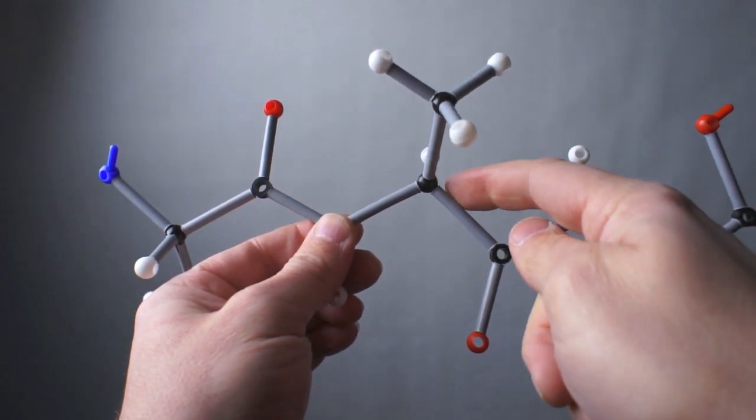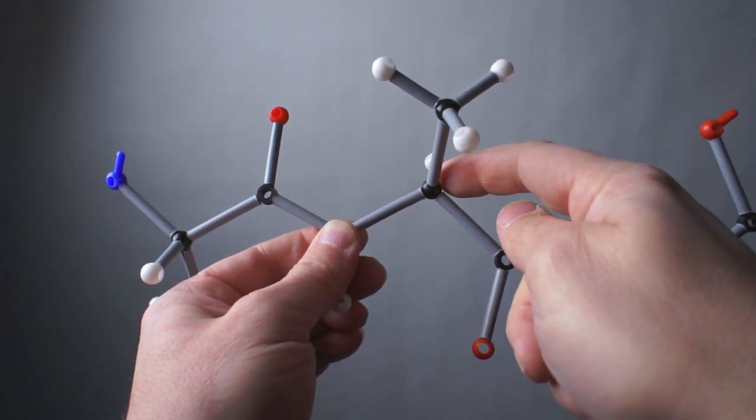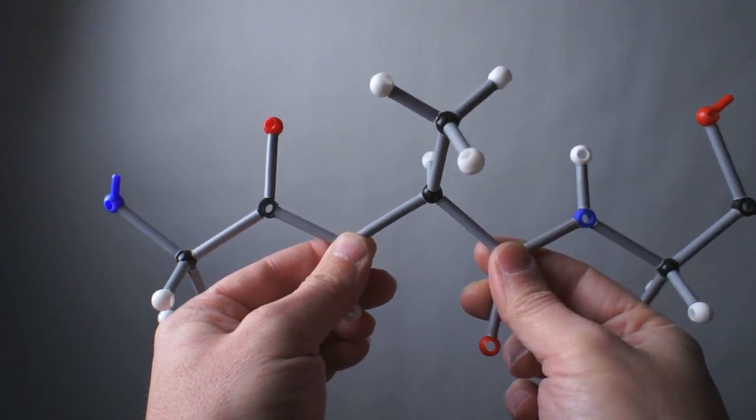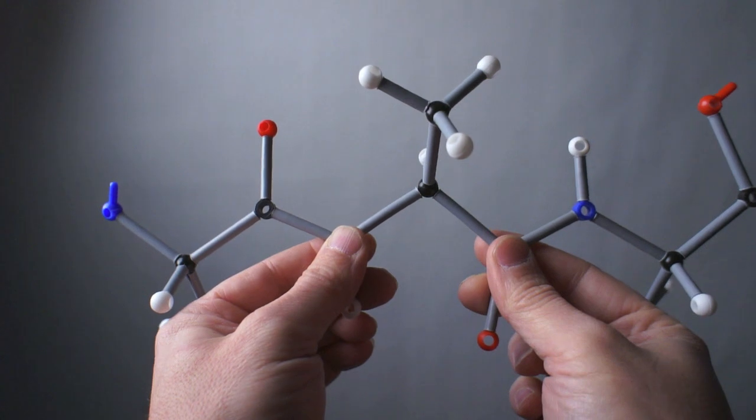Then we're going to rotate psi, which is this angle from the alpha carbon to the carbonyl carbon, by 180 also. Right now all the bonds phi and psi are 180 degrees.